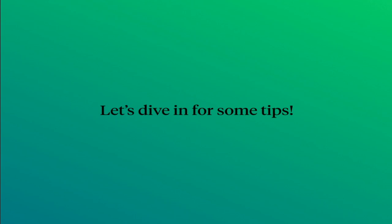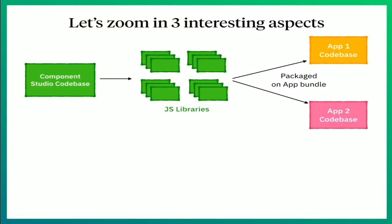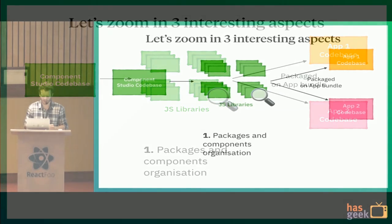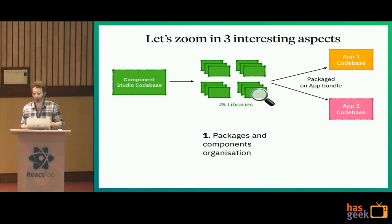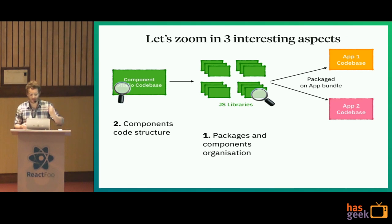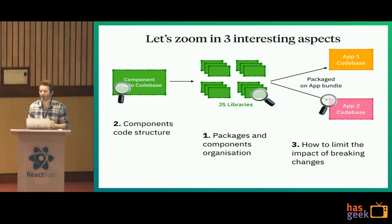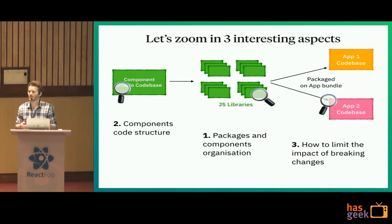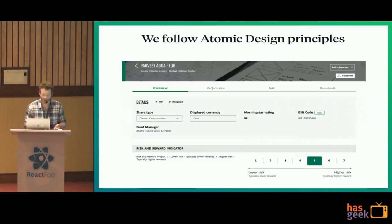Let's dive into some tips on what we think made the difference. First, how we organize our packages and components — we follow atomic design principles. I'll dive into our code structure for each component type, and finally how we limit the impact of breaking changes, which is important since six other teams are working with us daily and contributing pull requests. We needed to set up a strong automated process with training to make it work well.